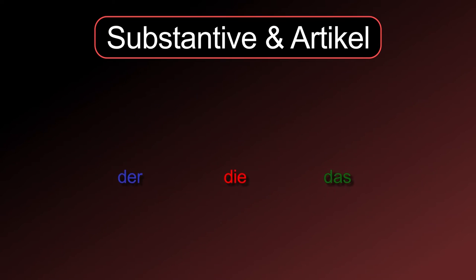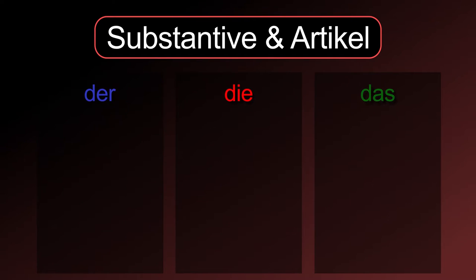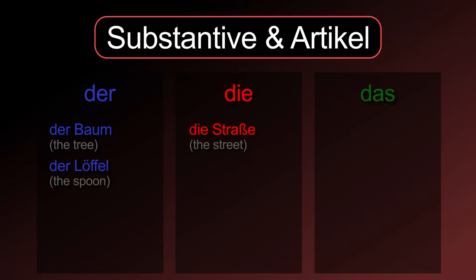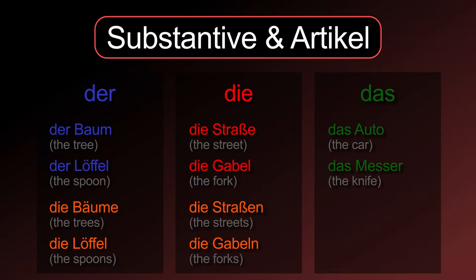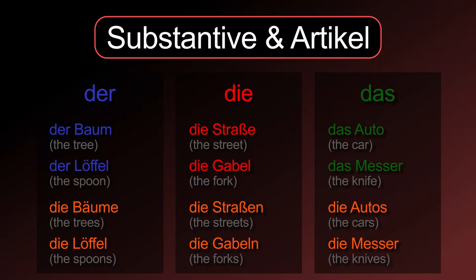Let's look at some examples. Der Baum, der Löffel, die Straße, die Gabel, das Auto, das Messer. The plurals for these nouns are die Bäume, die Löffel, die Straßen, die Gabeln, die Autos, die Messer. In German, it is extremely important to always learn the nouns together with their genders, because there is no logical pattern behind it.